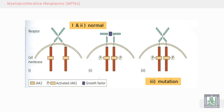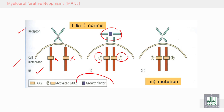Myelofibrosis is due to JAK2 mutation. Looking at the normal receptor on the cell membrane and intracellular signal transduction: normally there is no activation of the cell without growth factors. We need a growth factor in order to activate the receptor, and then intracellular signal transduction occurs by phosphorylation. This is normal JAK2 under normal conditions.